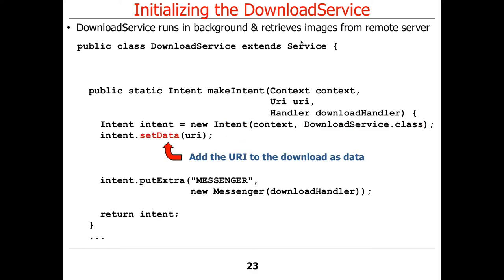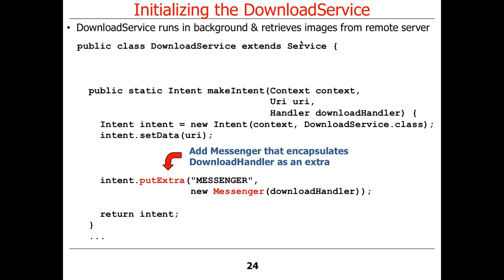We set the data to be the URI passed into the factory method. Then comes the part that's different and cool: we create a new messenger. A messenger is basically a proxy that encapsulates a handler. We pass in the download handler from the activity — that's what's going to be used as the target of the response from the service back to the activity with the downloaded path name. That messenger gets created and put as an extra into the intent with the string name 'messenger.' When we call startService, this intent gets passed to the service containing both the URI (so we know what to download) and the messenger (so we know how to get results back to the client).